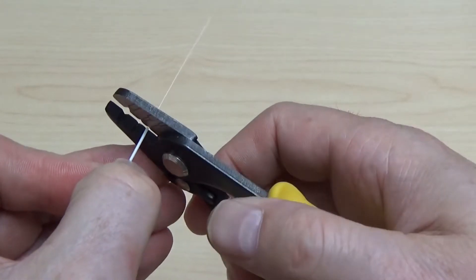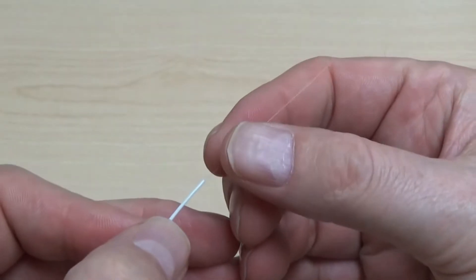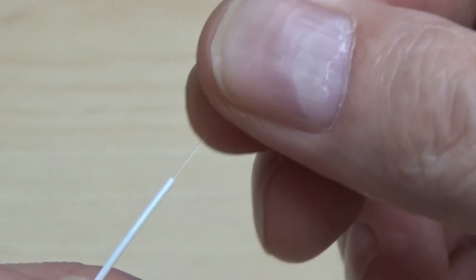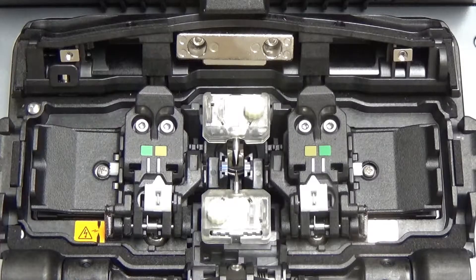A loose buffer fiber has no protective material around the acrylate coating. You can see that once you've stripped the 250 micron coating and look closely when tugging it gently, the fiber is loose inside its 900 micron jacket.